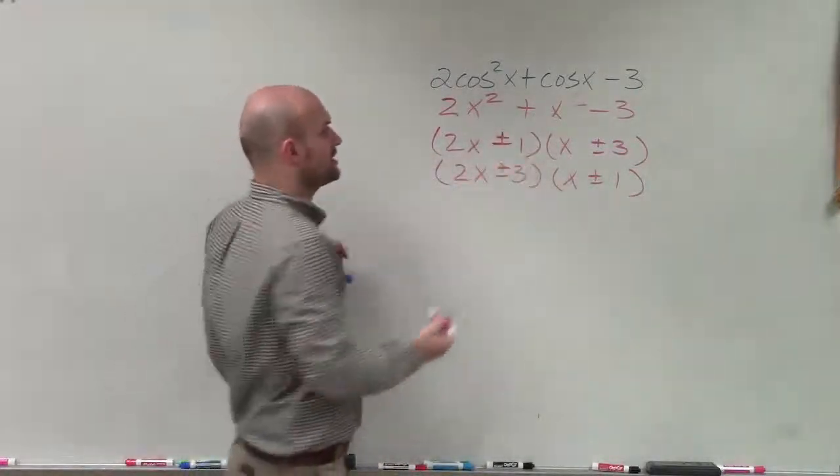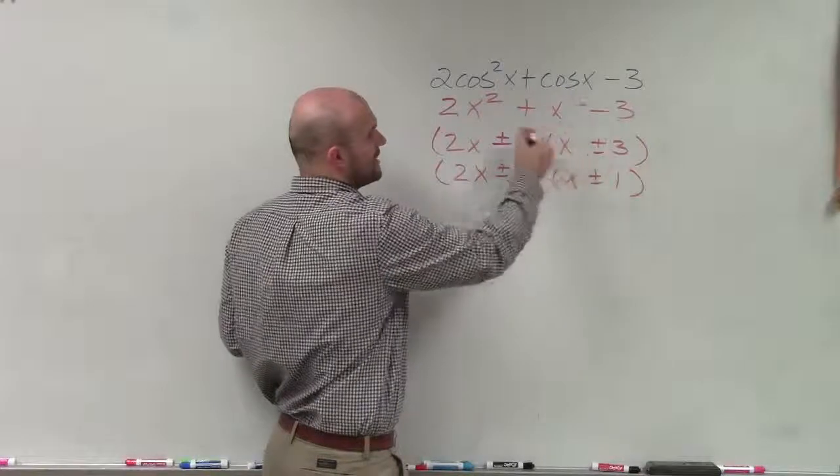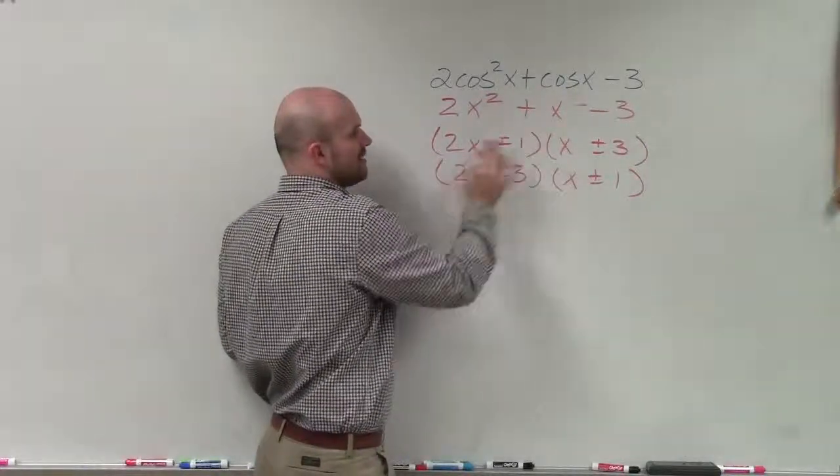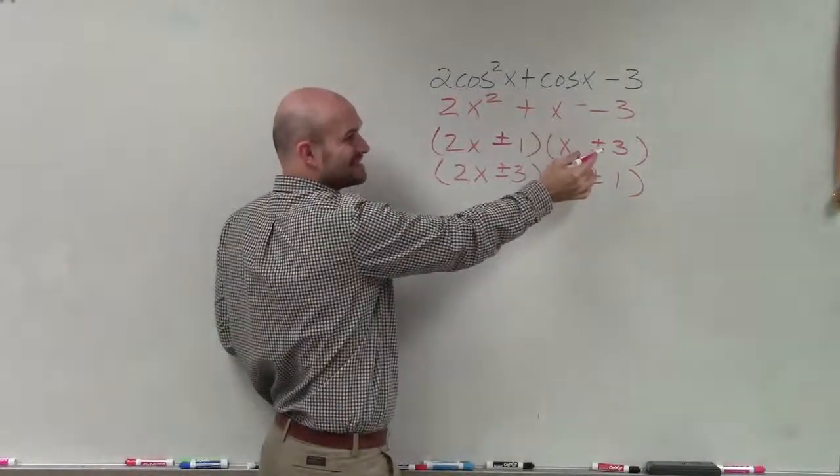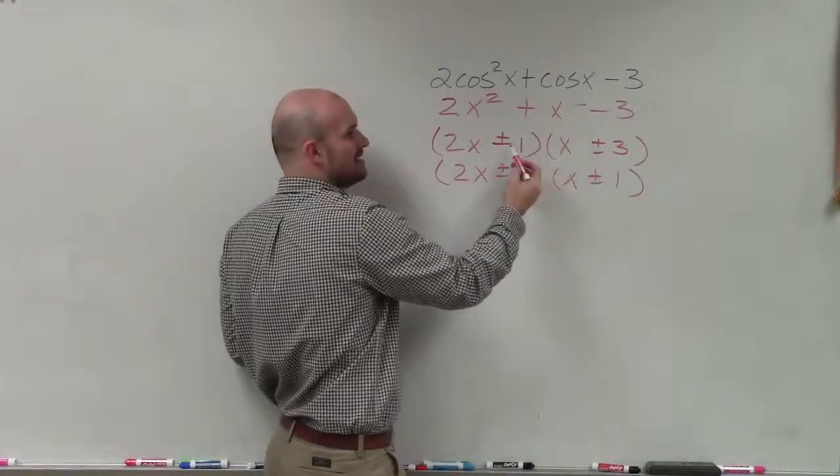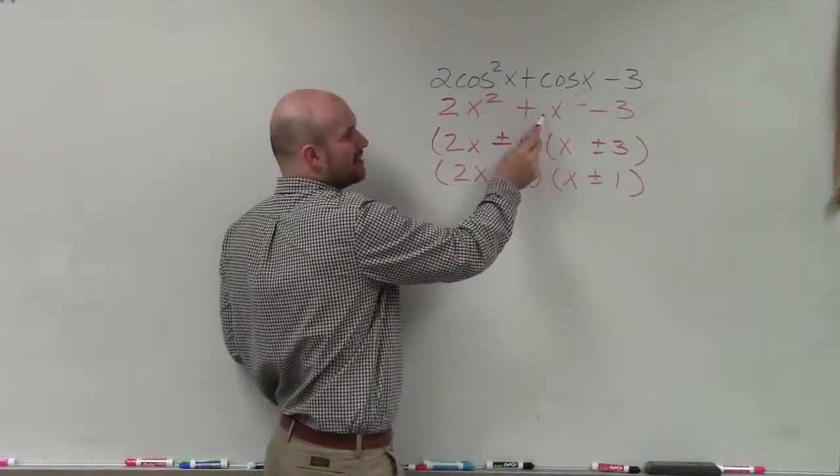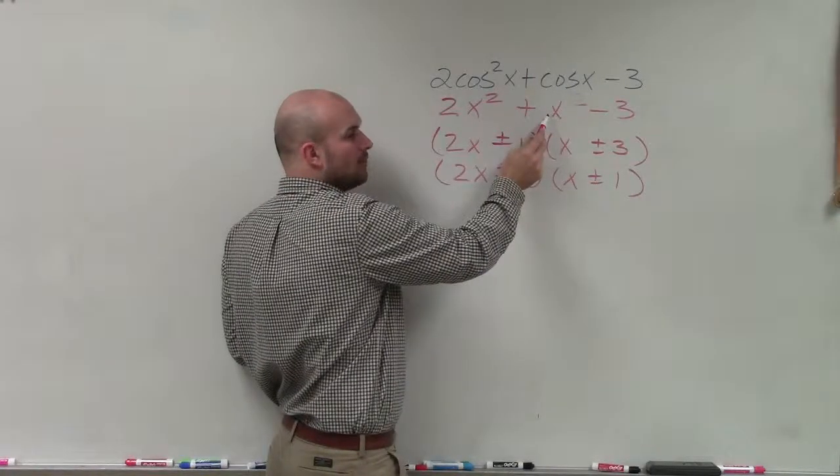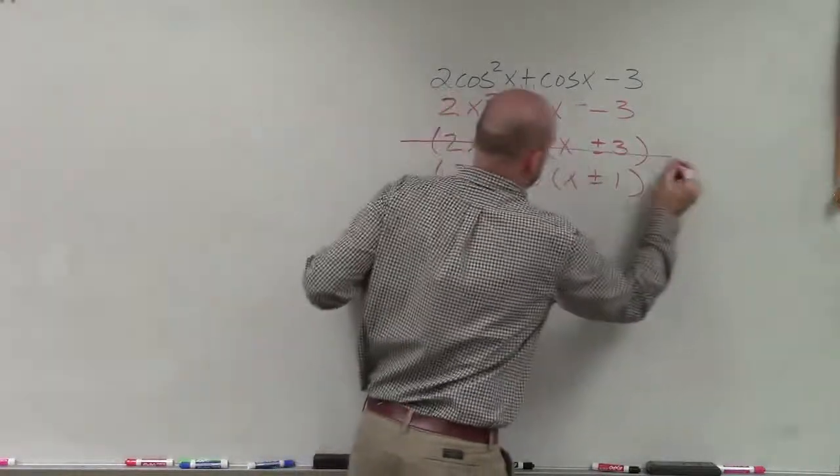But to determine our middle term, what we're going to do is multiply our outer and our inner. So if I did 2x times 3, that's going to give me 6x, and it doesn't matter if I add or subtract 1x, I'm not going to get anywhere near 1x. So therefore, that's not going to work.